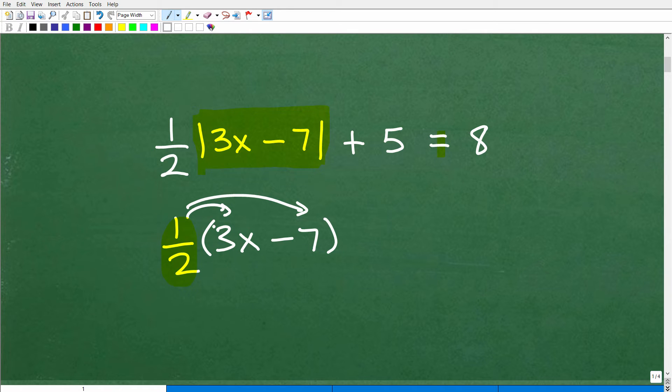Now, in algebra, you can definitely do this because these are parentheses. This is the distributive property. So I would have three halves X minus seven halves. So this is correct.